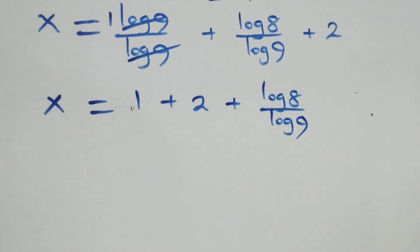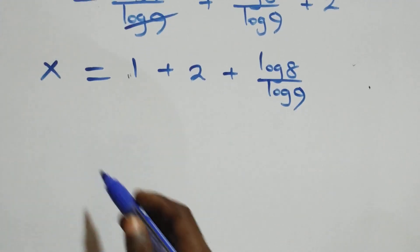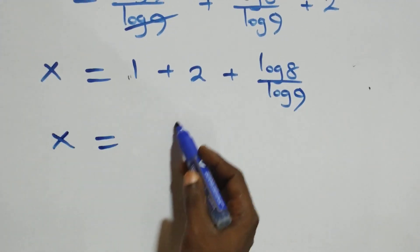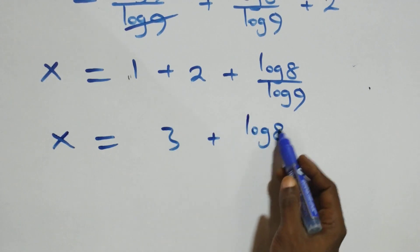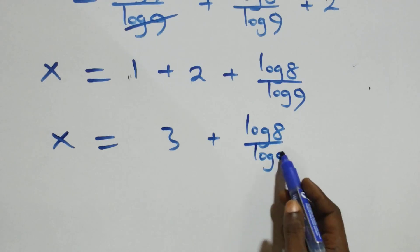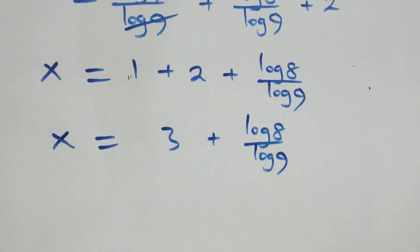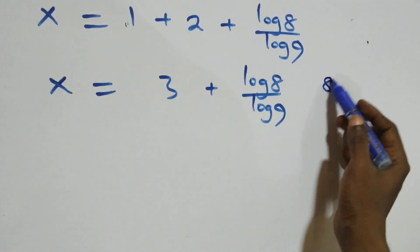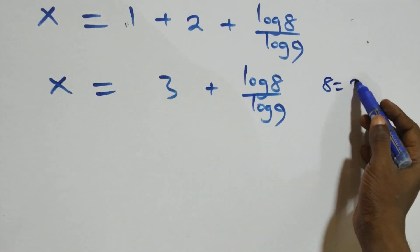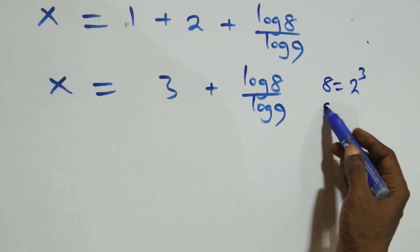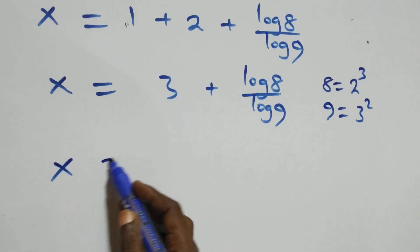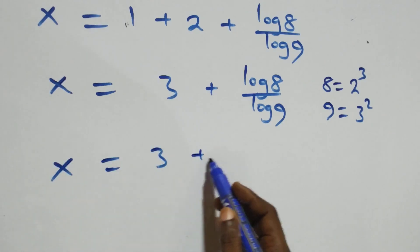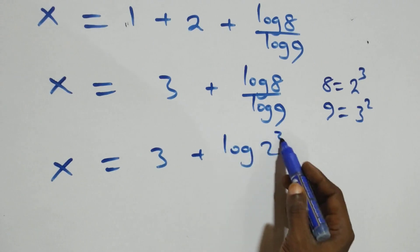So x equals log 9 plus log 8, all over log 9. We can express 8 as 2 × 2 × 2, which is 2 raised to power 3, and also 9 as 3 × 3, which is 3 squared. So x equals log 9 plus log(2³), all over log(3²).